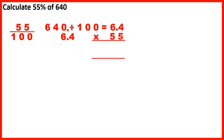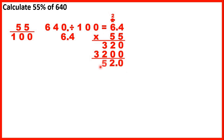Now we need to multiply by 55. There's a decimal point in the question so we copy it down into our answer. 4 times 5 is 20, so 2, 0. 6 times 5 is 30 plus 2 is 32. We write a 0, then 4 times 5 is 20, so 2, 0. 6 times 5 is 30 plus 2 is 32. Adding up our answer lines we get 352.0, which we write as 352.